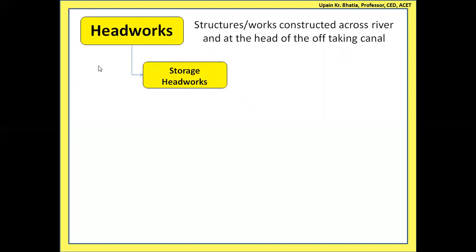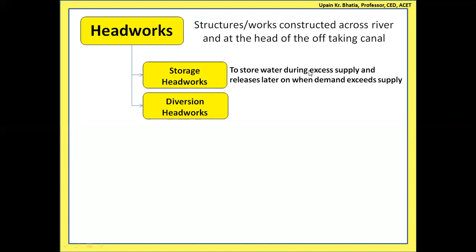Headworks are of two types: storage headworks and diversion headworks. Storage headworks, as the name suggests, is used to store water during excess supply and releases the stored water later on when demand exceeds supply. During monsoons, excessive rain causes the catchment area to send more water into rivers, so supply exceeds demand — this is excess supply.